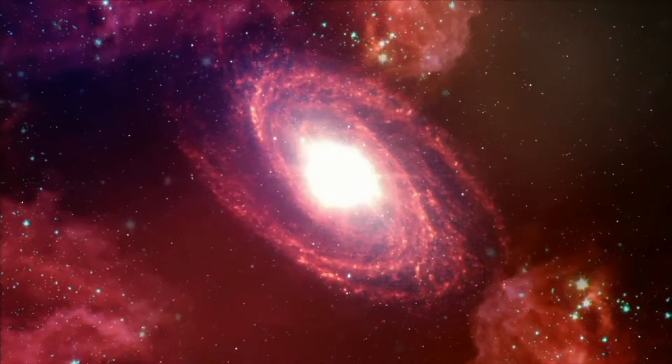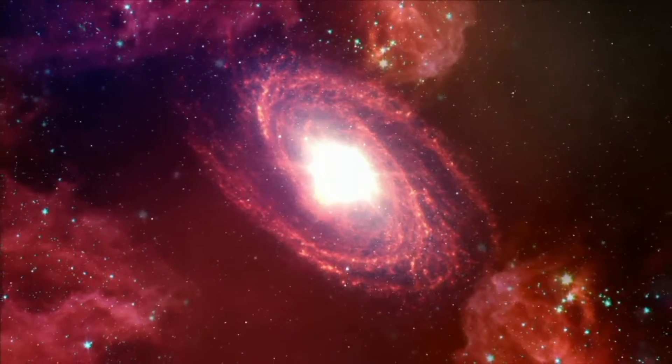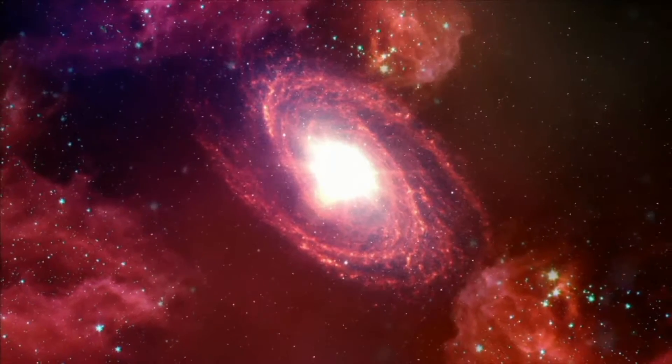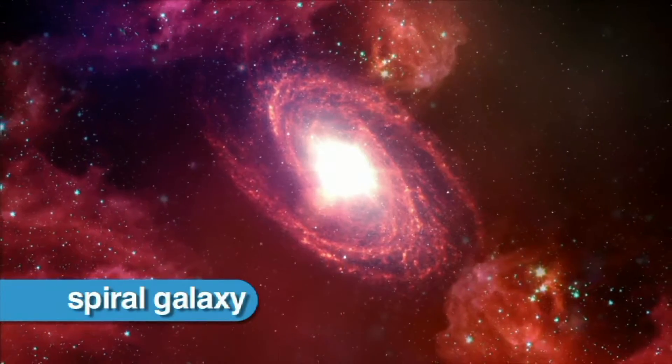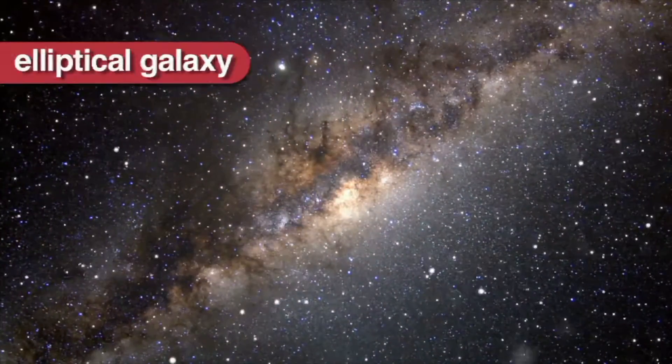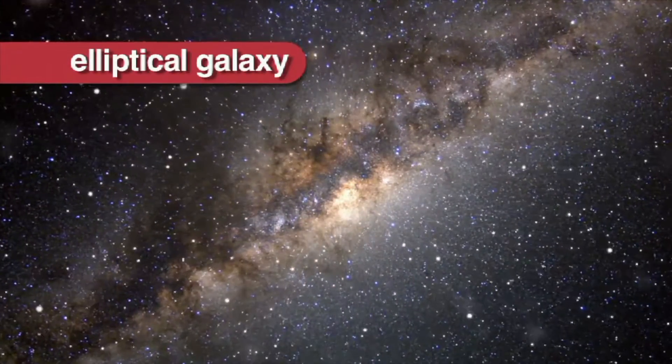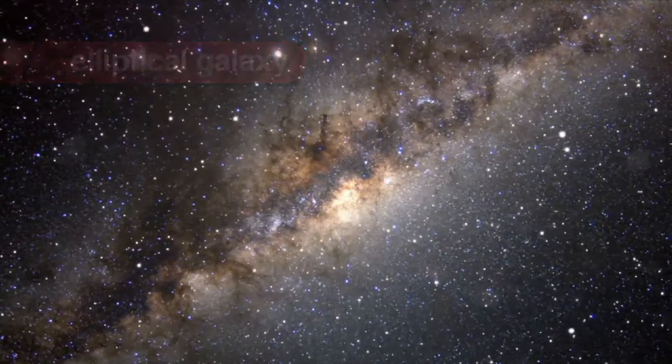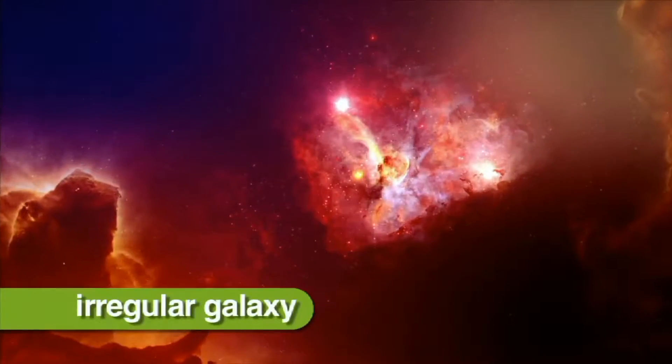Galaxies are divided into three basic types based on their shape: spiral galaxies, elliptical galaxies, and irregular galaxies.